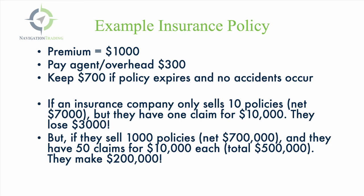Let's take a look at an example. If an insurance company sells an auto policy and the premium is $1,000, they have to pay the agent and the overhead — let's say that adds up to $300. So the insurance company keeps $700 if the policy expires with no accidents. If they only sell 10 policies, they'll net $7,000. But if they have one claim for $10,000, they'll end up losing $3,000 on those 10 policies.